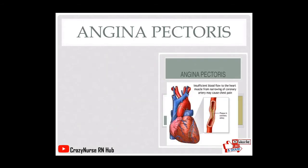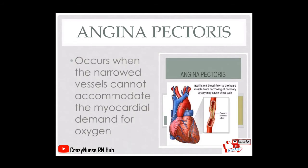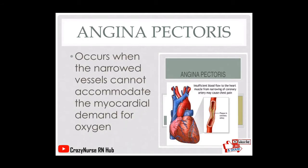Angina pectoris occurs when narrowed vessels cannot accommodate the myocardial demand for oxygen. We refer to this as chest pain or chest discomfort. This happens when there is a narrowed vessel due to plaque, clot, or atheromas that inhibit blood from reaching the muscle cells.